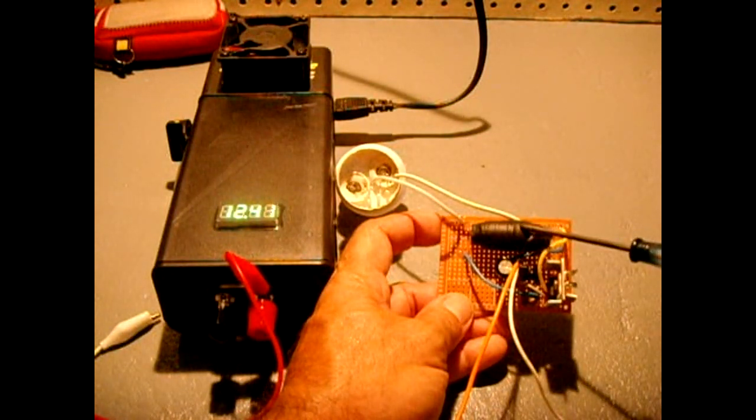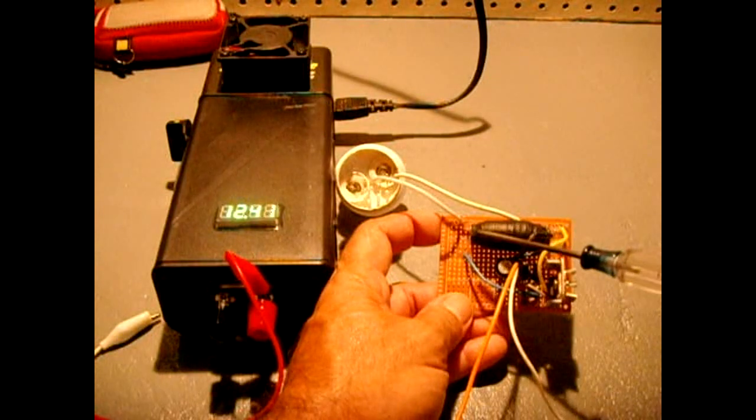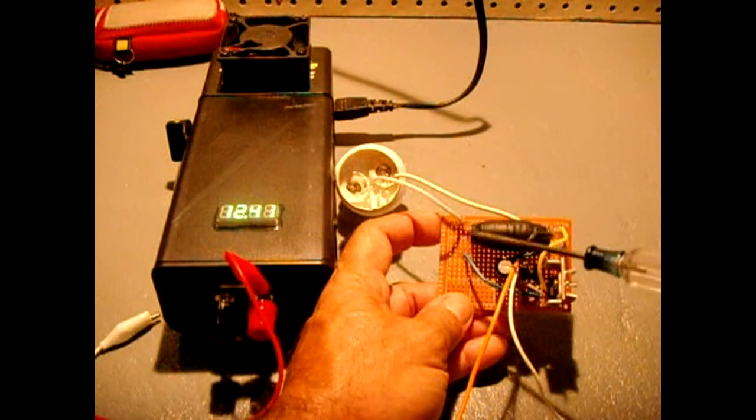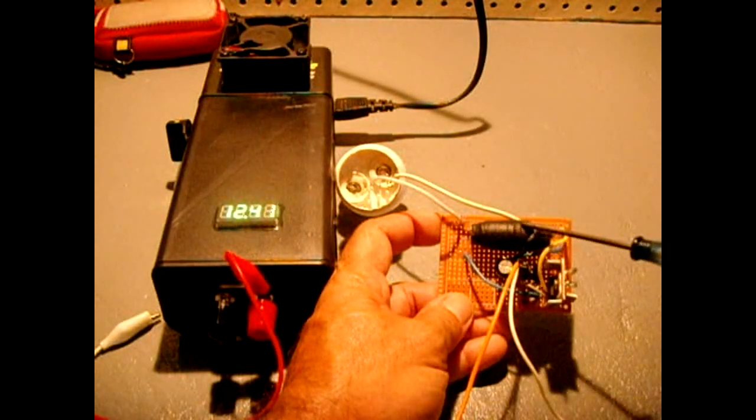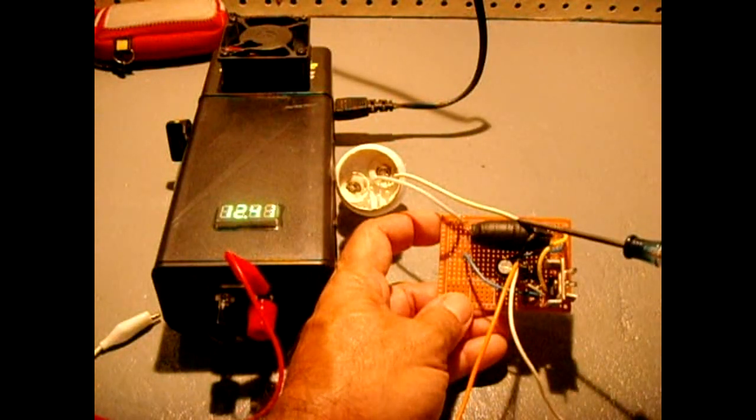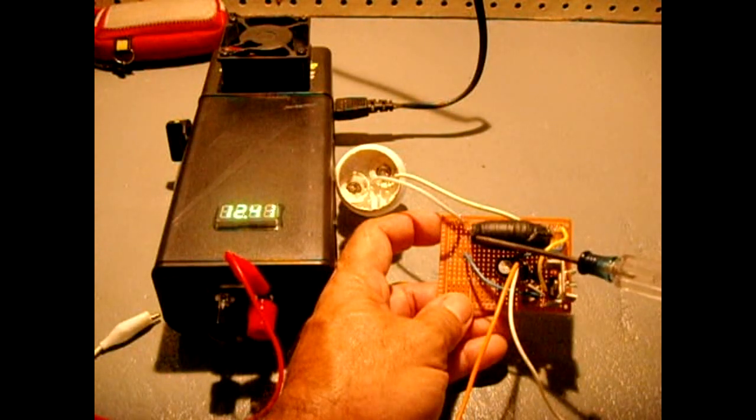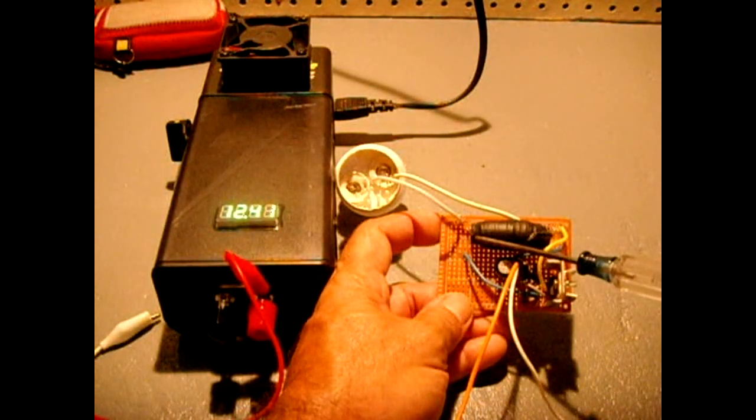Once everything is covered in tape, then you could do the high voltage winding. But just to let you know, it's a good idea to keep everything wound in the same direction. Now that this is covered in tape, the 13 turn winding for the feedback, you can start winding your high voltage winding using the 30 gauge wire.